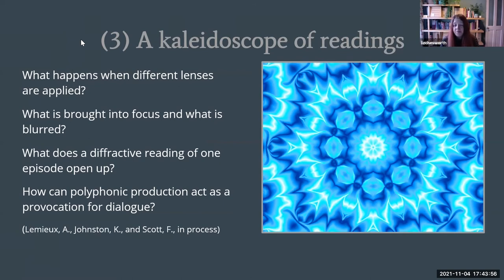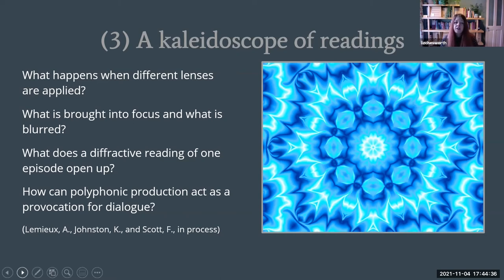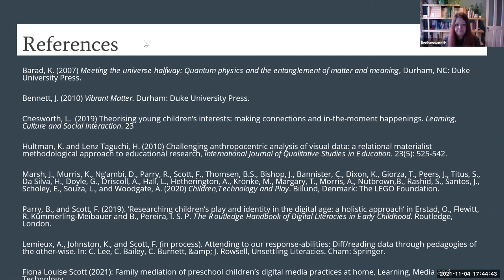What we have hoped to do in this session is to make visible where we are as a trio in terms of our work in progress. We've chosen to use the image of a kaleidoscope to represent the ways we've turned it to look in three different ways at the one episode. What we're really interested in — and what might be a fruitful provocation — is what happens when these different lenses are applied. What aspects of that digital authoring are brought into focus and what are blurred? If we read those three readings together in dialogue, what new ideas open up and what tensions are produced?